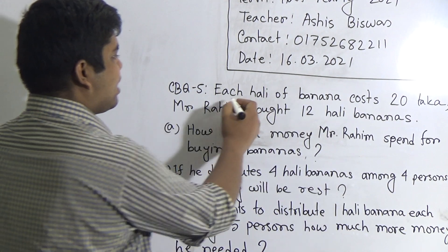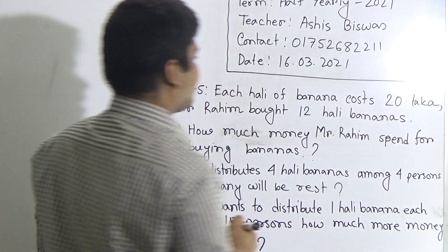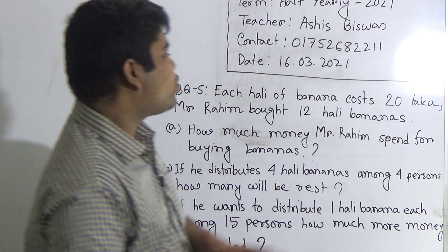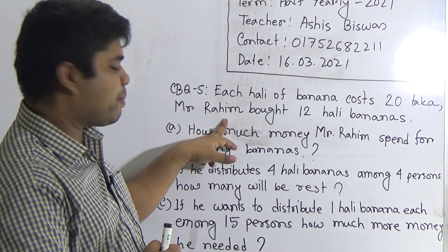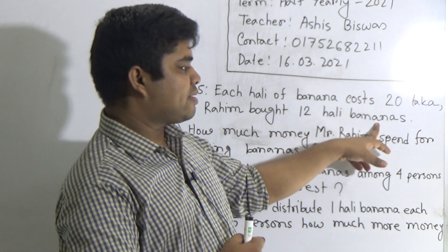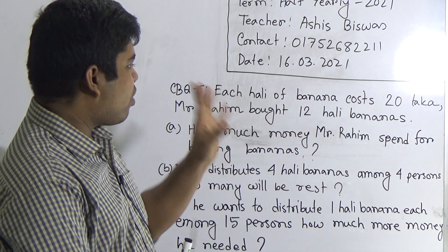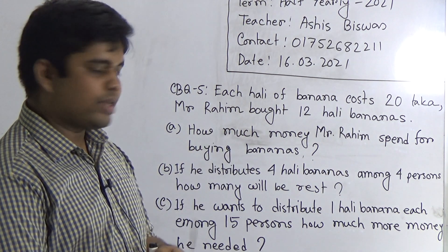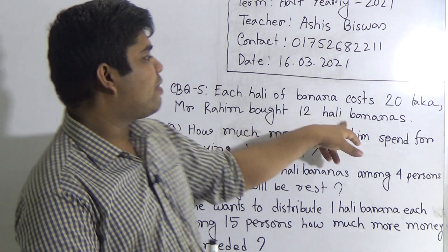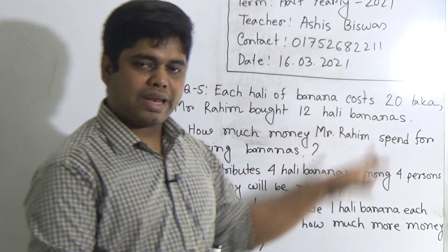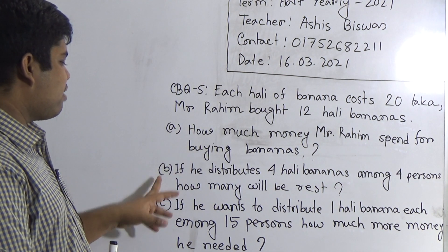CBQ 5: 1 hali of bananas costs 20 taka — that means the price of one hali banana is 20 taka. Mr. Rohim is a person who bought 12 hali bananas. Notice: this is the stem. The price of one hali banana is given, which is 20 taka, and Mr. Rohim bought 12 hali bananas. By using this information we shall solve questions A, B, and C.